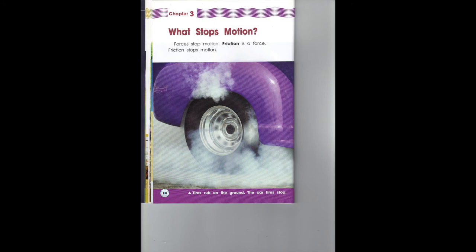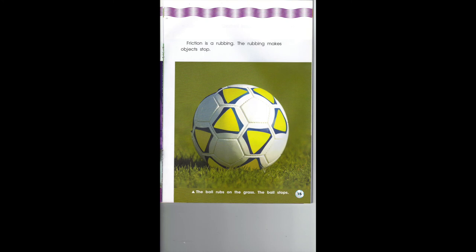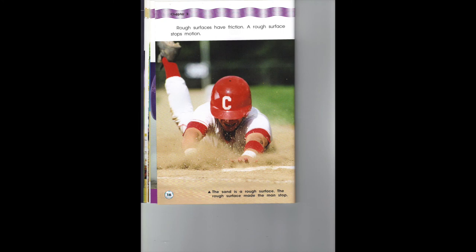Chapter 3: What stops motion? Forces stop motion. Friction is a force — friction stops motion. Tires rub on the ground and the car tires stop. Friction is a rubbing — the rubbing makes objects stop. The ball rubs on the grass and the ball stops. Rough surfaces have friction. A rough surface stops motion. The sand is a rough surface — the rough surface made the man stop.